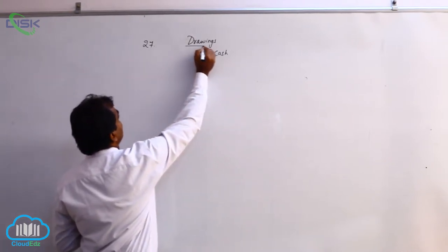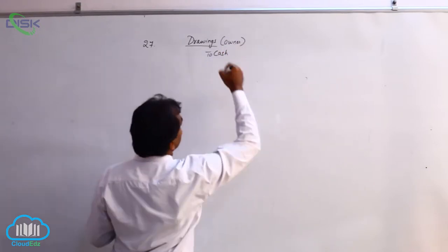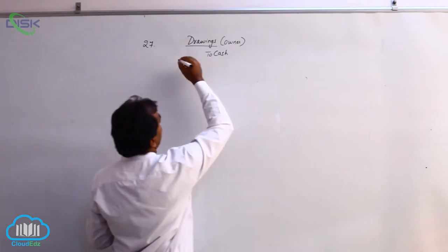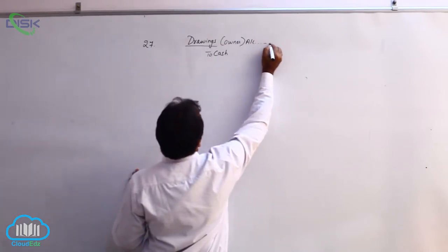Drawings represents the owner indirectly. The owner is a personal account and he is receiving cash from the business. He is the receiver, so we debit. Therefore, we debit drawings account.